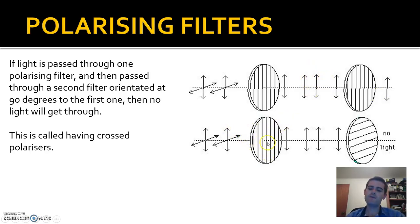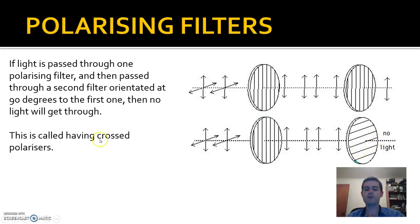On the other hand, if you have a vertical filter that lets through vertically polarized light and then a second filter that's horizontally polarized, you will have no light getting through both of them. There's no way that vertically polarized light waves can get through a horizontally polarized filter. So that's what we call crossed polarizers — if two polarizers are at 90 degrees to each other, we say they're crossed.